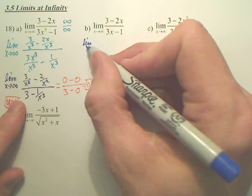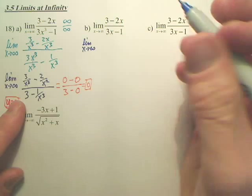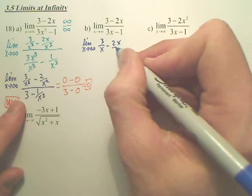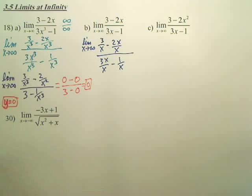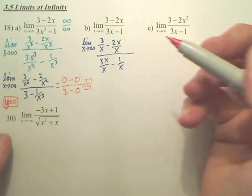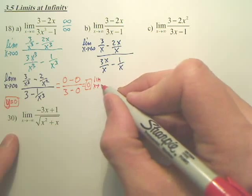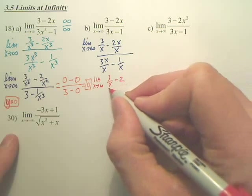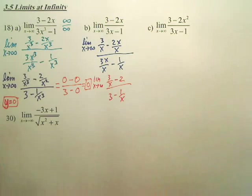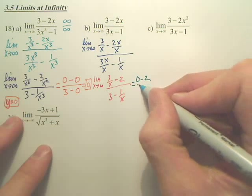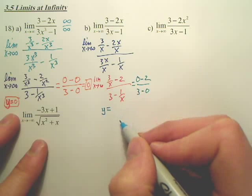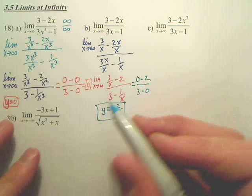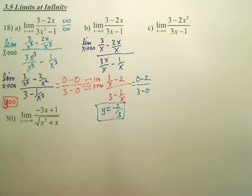For part (b), do the same exact thing, except what do we divide by? Divide by x. There are shortcuts to this — you don't always have to write all the steps out. Most people can actually visualize this without writing all the steps. What you end up with is the limit as x approaches infinity of (3/x − 2) over (3 − 1/x). When we plug in infinity, we get 0 minus 2 over 3 minus 0. So we have a horizontal asymptote at y equals negative 2/3. The answer is negative 2/3.